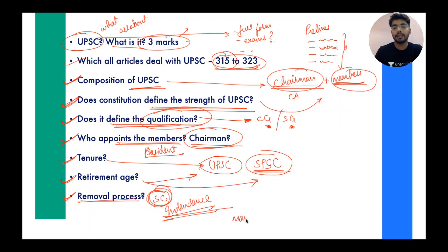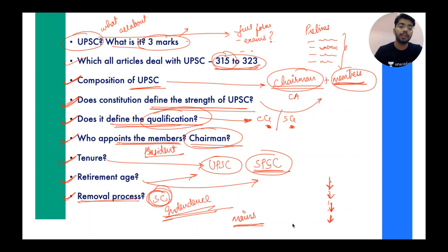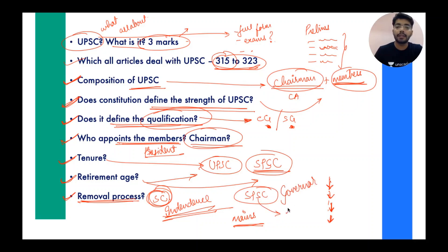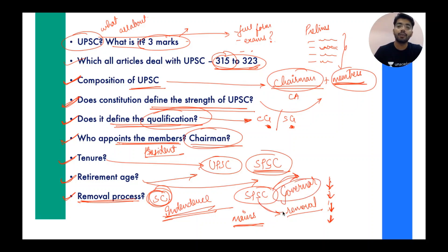If this question comes in mains, you will write the full removal process in a flowchart — where the process initiates, which house it goes to, that it passes with special majority, and a recommendation goes to the President. The President is bound to remove the member once the recommendation is before them. Similarly, for State PSC — even though the Governor is the appointing authority, when removal happens, the same process as the removal of a Supreme Court judge is followed.